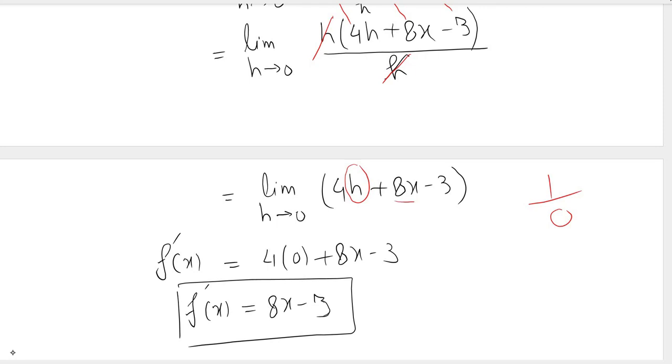Since the limit is with respect to h, 8x minus 3 is considered constant, so they come as is. And for h we replace its value with 0. So that gives us f prime of x equals 8x minus 3. Thank you.